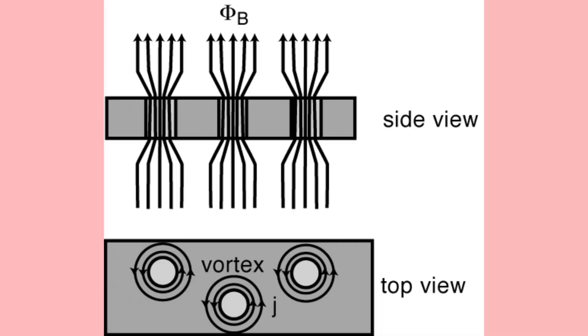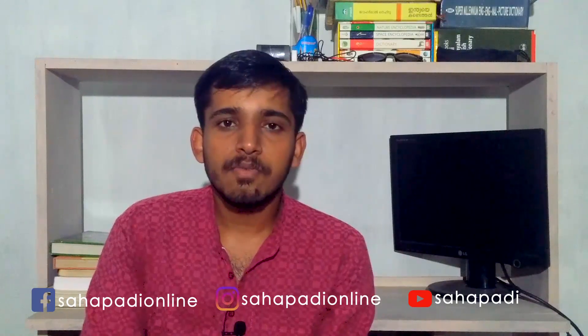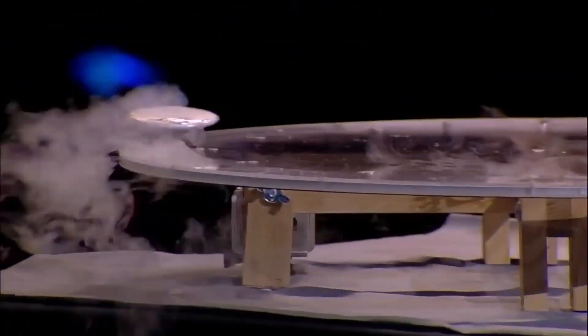If you look at the vortex, you can see the Meissner effect in the gap. The magnetic field lines are going to go to the top and bottom of the superconductor through the vortex. The whole of the magnetic field is directed through the superconductor.